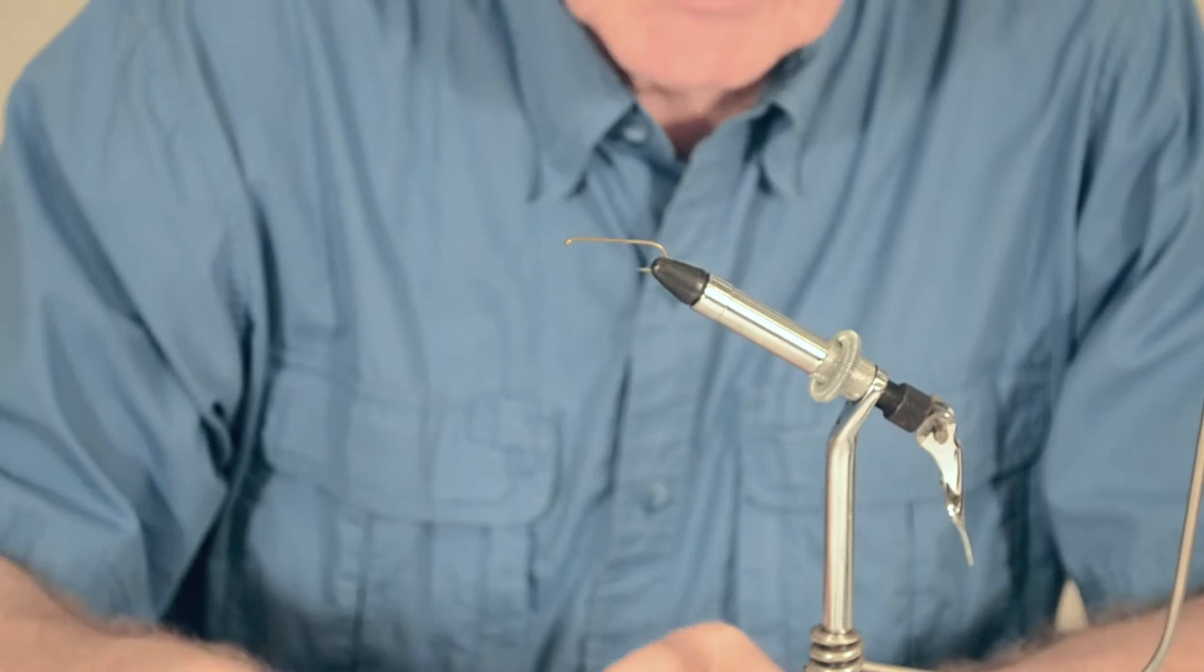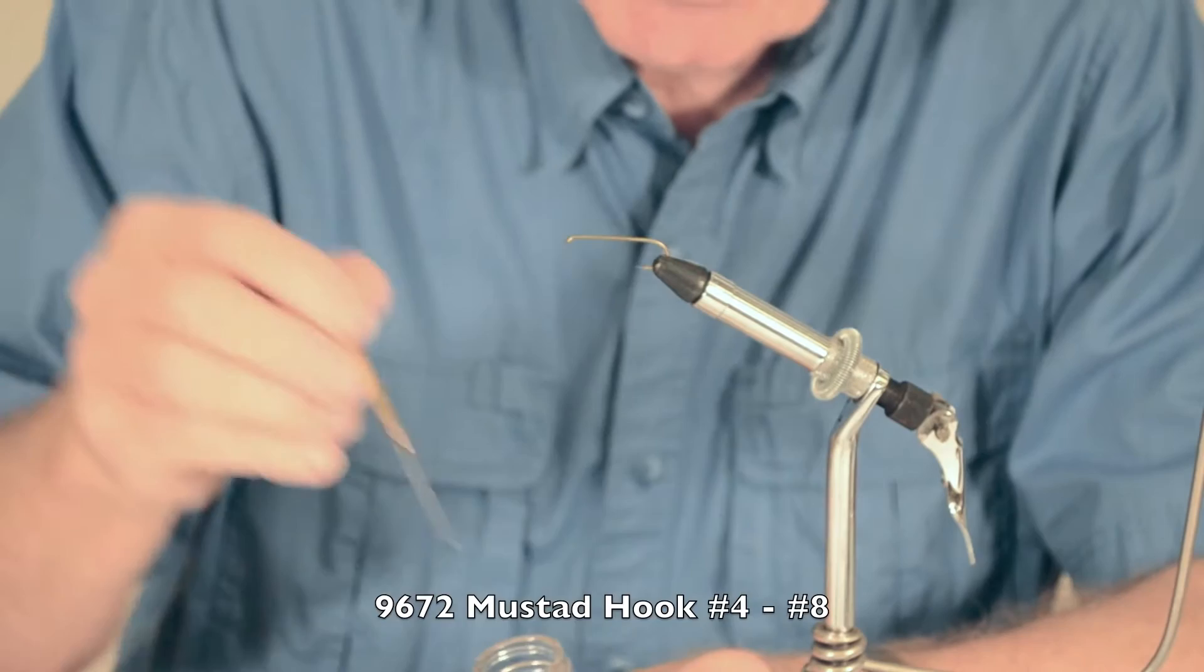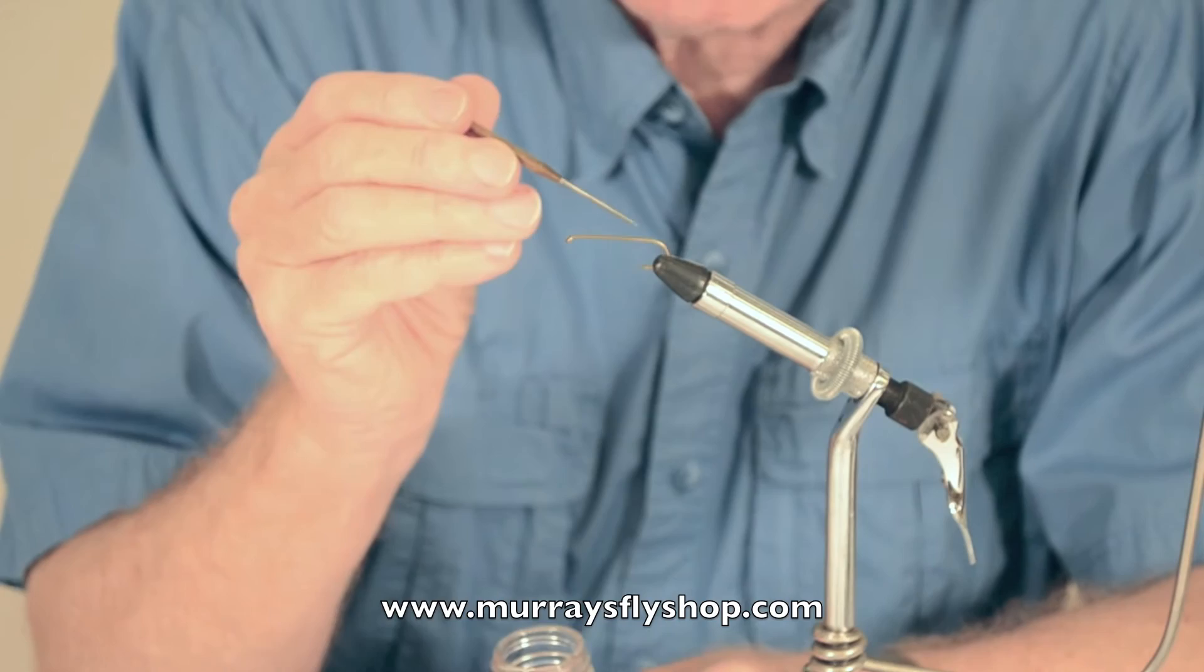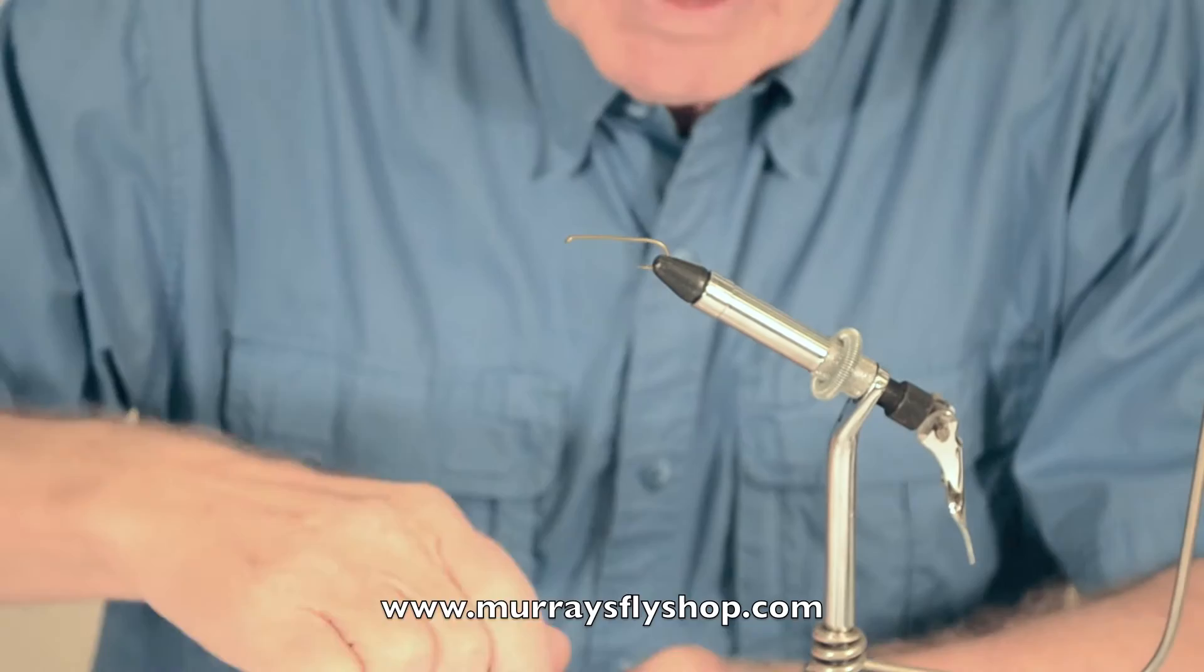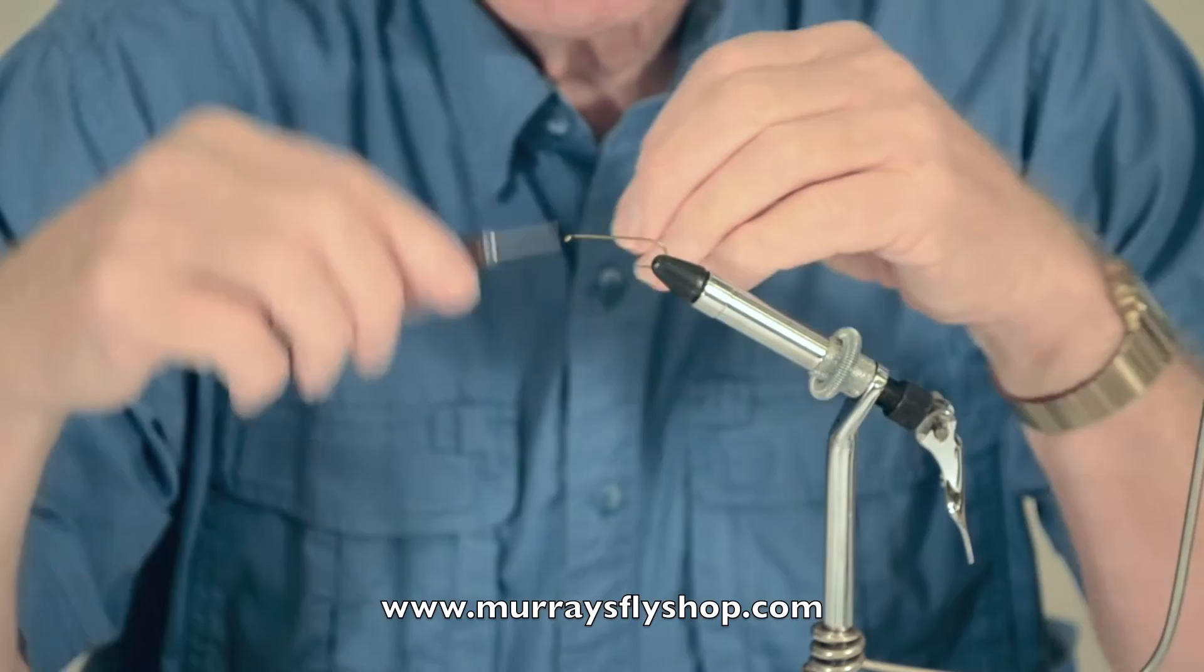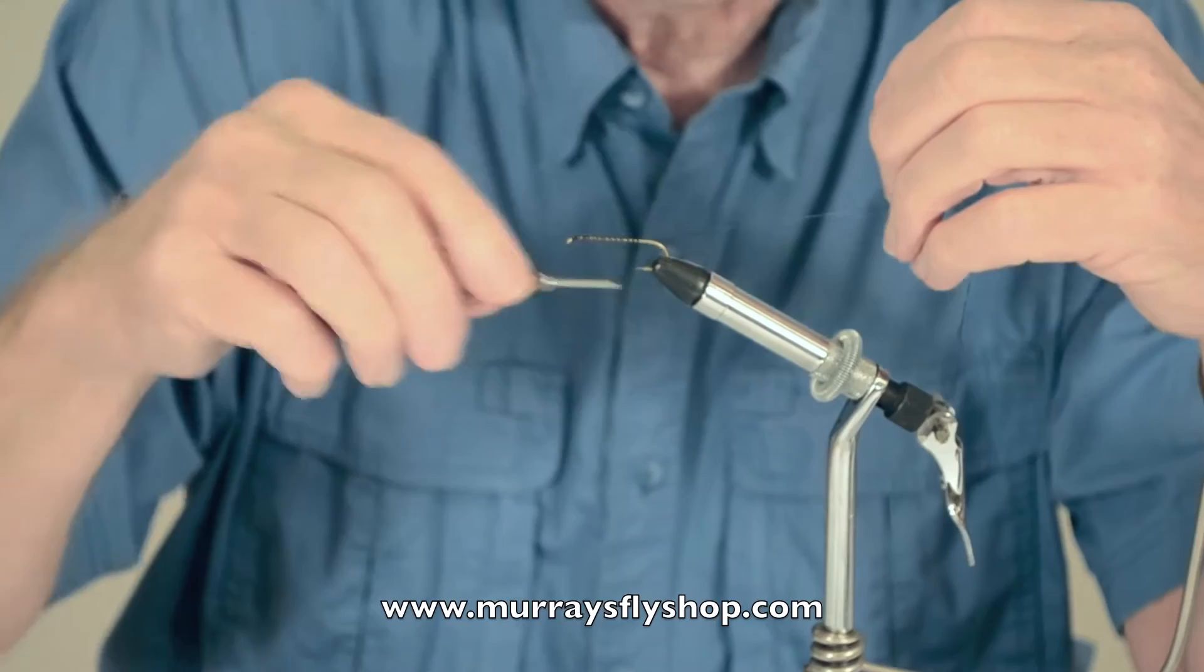We usually use a 96-72 Mustad hook from size 8 up to about a size 4. Put a little cement on the hook shank to help hold everything together. I use a cement that I make here because we make it rather thin. This enables the cement to penetrate down into the materials to hold everything together.